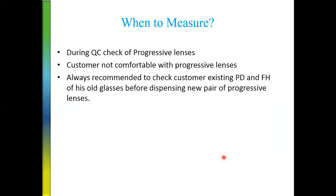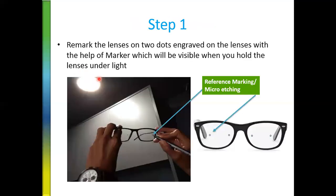The second situation when you need to do all these things is when the customer comes to you and says they are not comfortable with the progressive lenses. You need to know what went wrong, and to find out you have to remark the progressive lenses. It is always recommended to check the customer's existing PD and fitting height of their old glasses before dispensing a new pair of progressive lenses — similar to how a tailor takes measurements using your existing clothing as a reference.